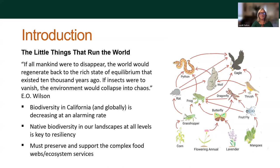Before we dive into all the details, since we're talking about insects — good bugs and bad bugs — I thought I'd start with a quote by the late great E.O. Wilson, from a paper he wrote in 1997 called 'The Little Things That Run the World.' If all mankind were to disappear, the world would regenerate back to the rich state of equilibrium that existed 10,000 years ago. If insects were to vanish, however, the environment would collapse into chaos. What he's saying is that it's all connected — it's all about the food chain, the food web depicted on the sketch to the right.